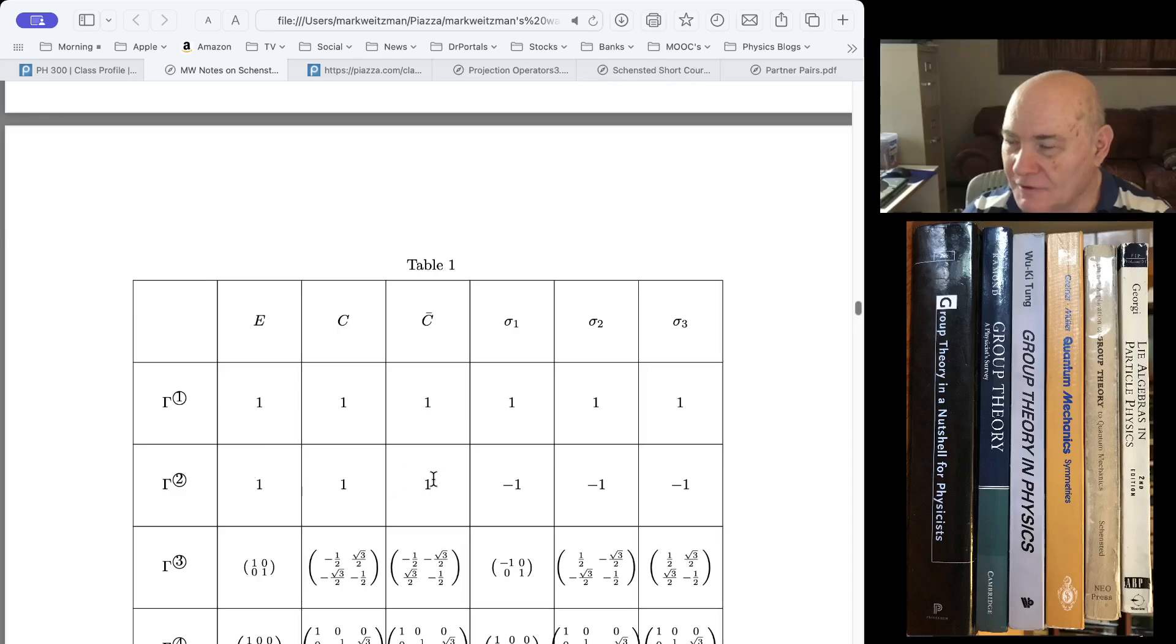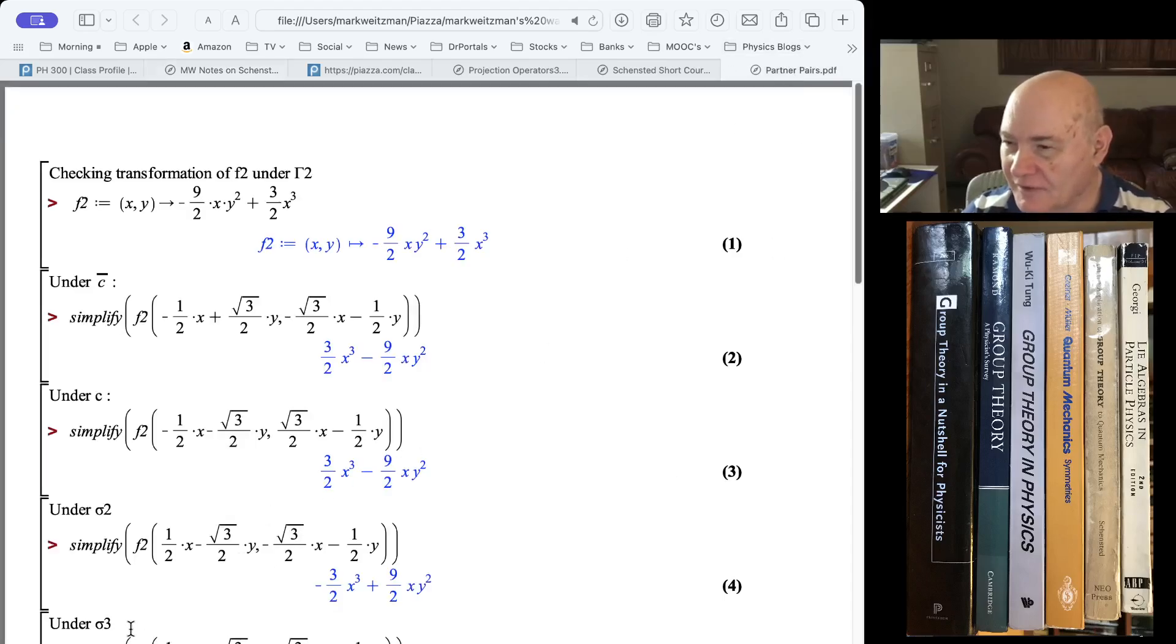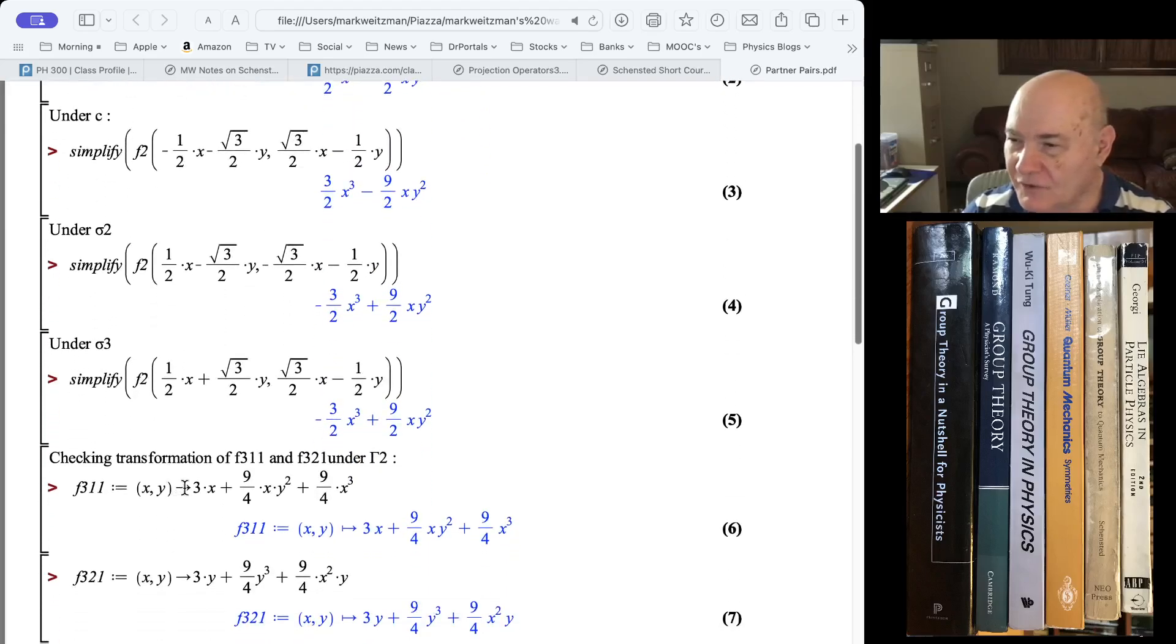And so I got this function, so that didn't change. Under C, again, F two of the transform coordinates didn't change. But under sigma two, when I put the transform coordinates in, it went into minus itself.